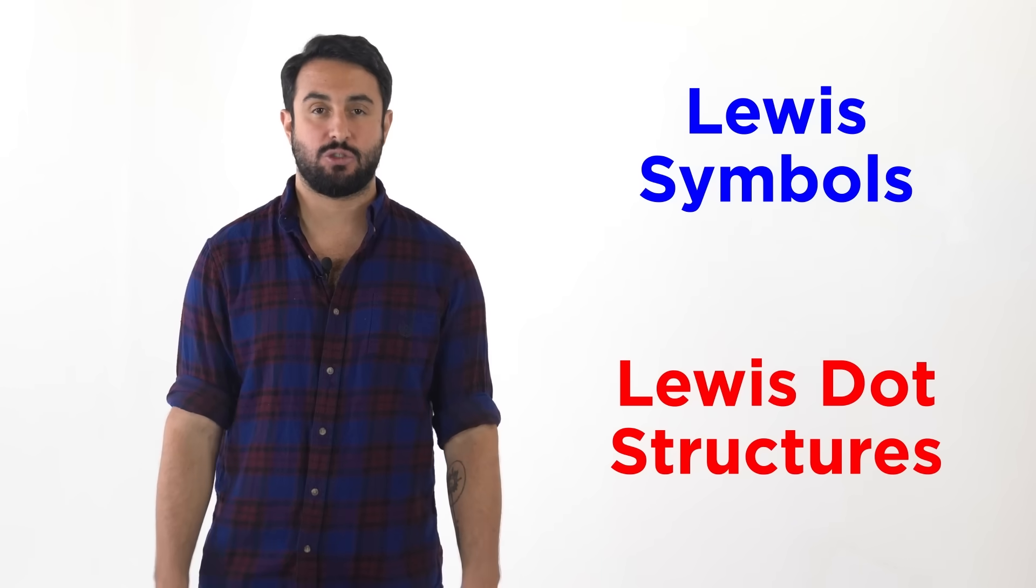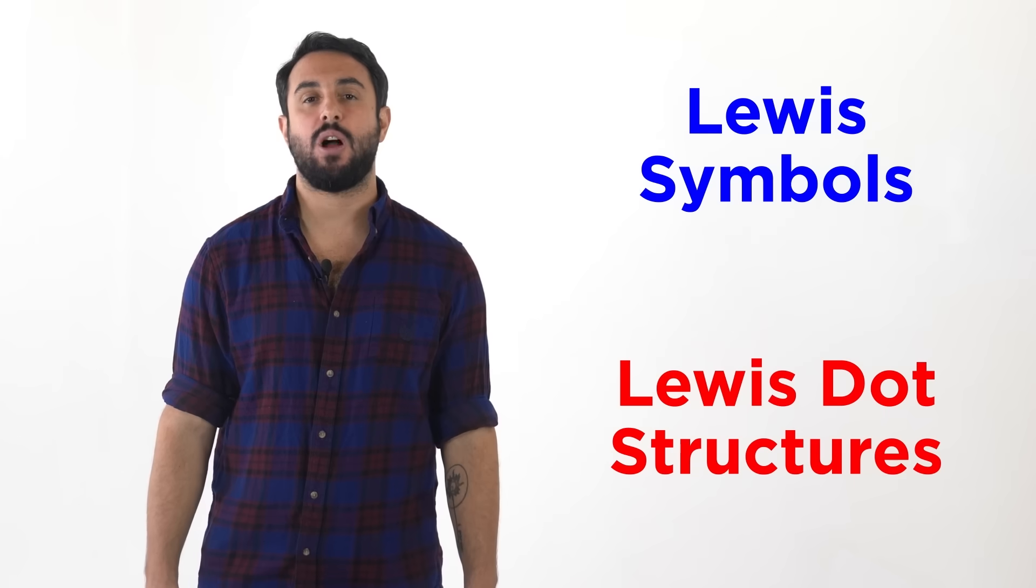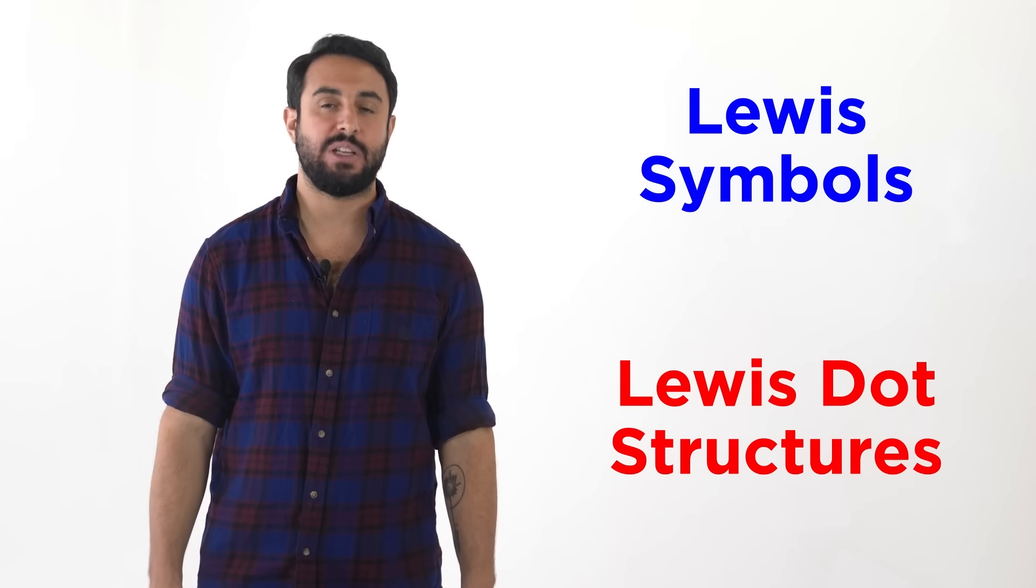The convention we will use is that of Lewis symbols, or Lewis dot structures. A Lewis symbol will refer to an individual atom, so let's learn how to draw these first before drawing complete structures.